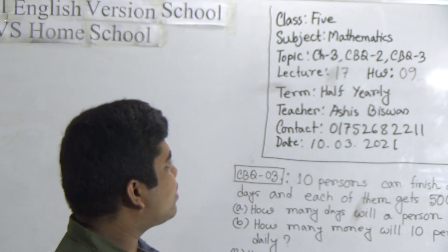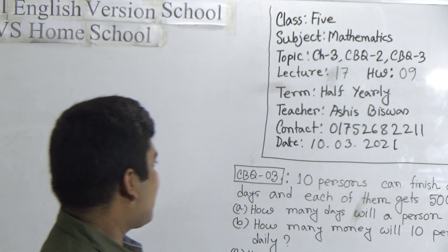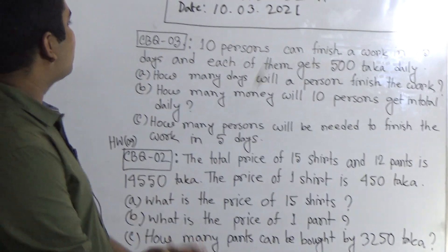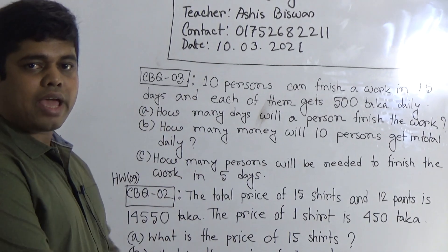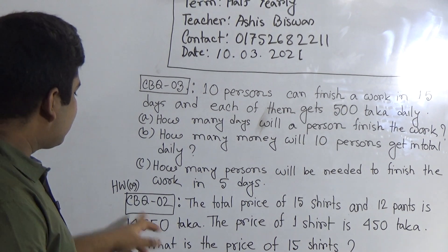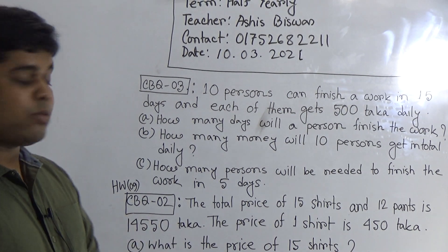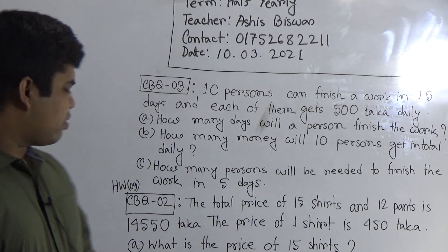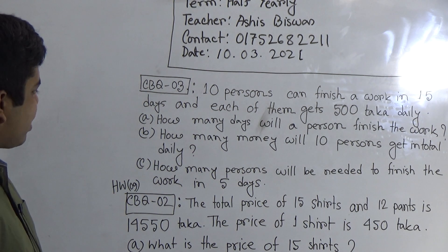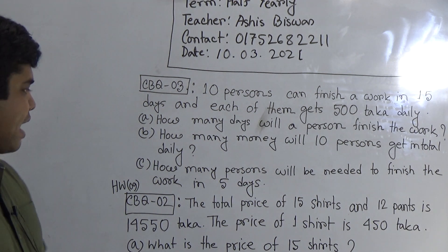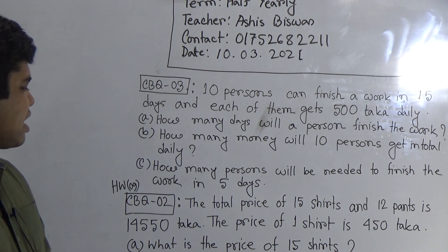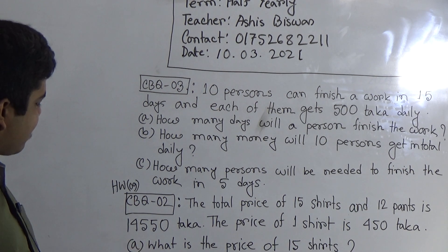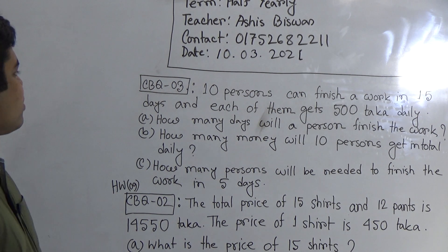My dear students, let us start. At first we read CBQ number 3, because we shall solve this question as CW in our class. CBQ number 2 will be your SW. But you should bear in mind that CBQ number 2 was also solved in our previous class as a word problem. So just arrange that according to a, b, and c.